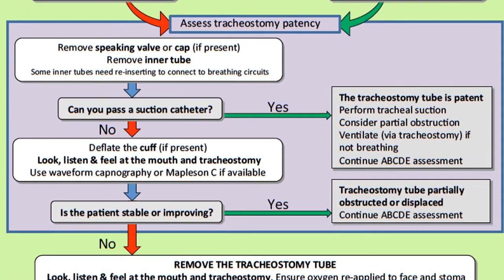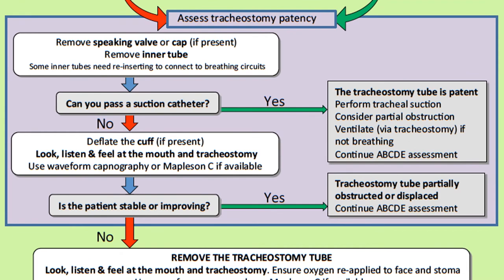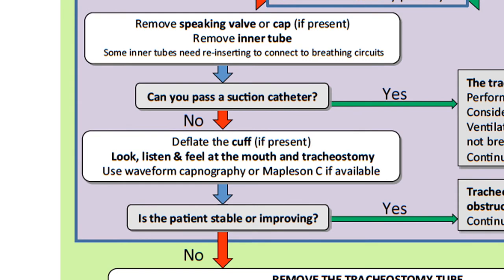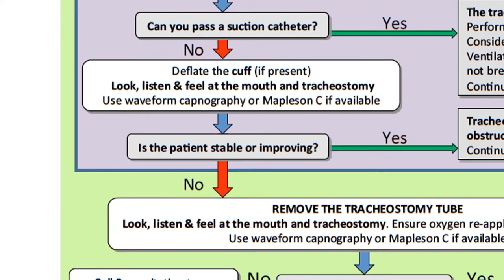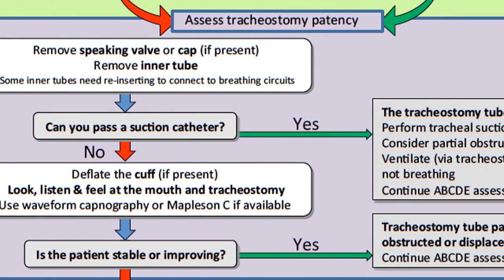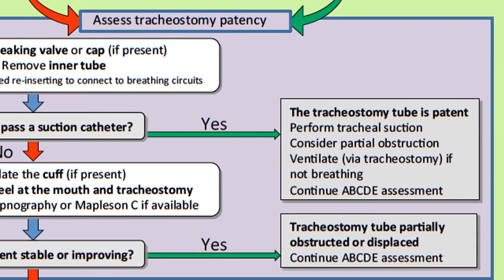The next step is to assess the patency of the tracheostomy. Assessing patency can be broken down into two sequential steps. Step 1: try to pass the suction catheter through the tracheostomy. Step 2: look, listen and feel at the mouth and the tracheostomy. Before trying to pass the suction catheter, bear in mind that tracheostomies have a number of components — you may need to remove any speaking valves, caps, or inner tubes, as simply removing these could resolve any obstruction. If the tracheostomy is patent, the catheter should pass easily into the trachea.